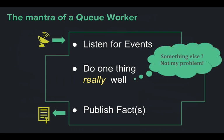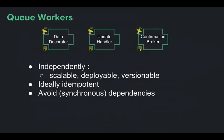When you're designing a queue worker and you start thinking about other problems that arise, maybe it's not something that needs to be coded inside that queue worker — maybe it's someone else's problem. Where possible, enforce that. If you follow this design pattern, say 'that's not my problem — I'm just going to publish a fact and let another extensible piece take care of it.' If you build them this way, these pieces are independently scalable, deployable, and versionable.